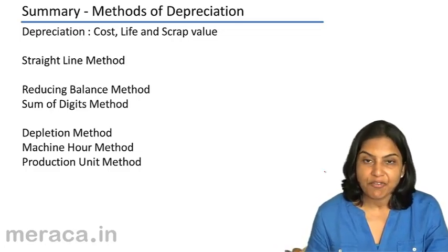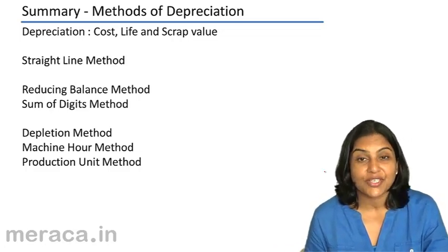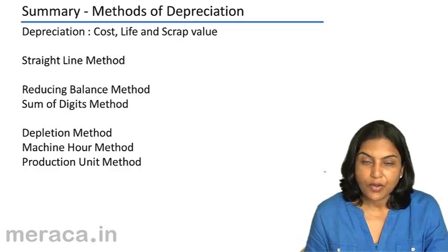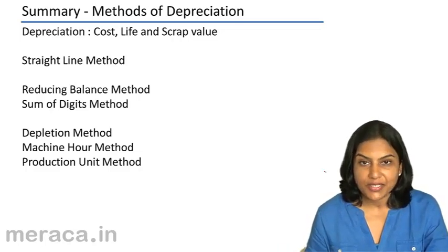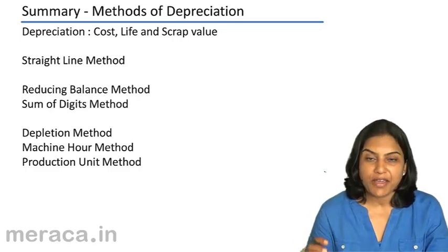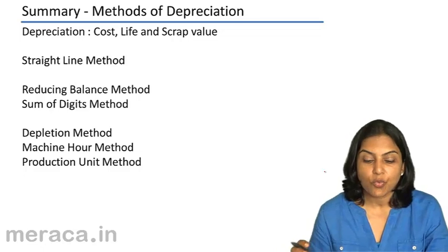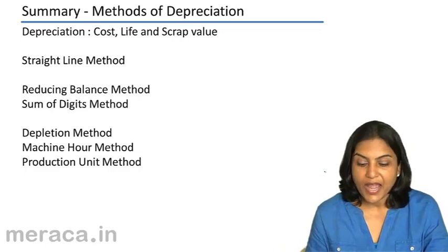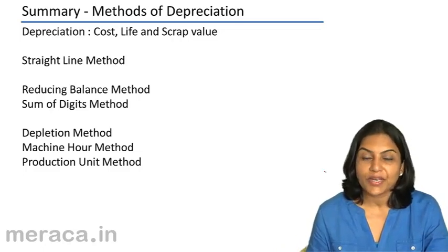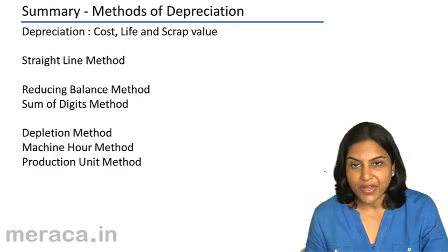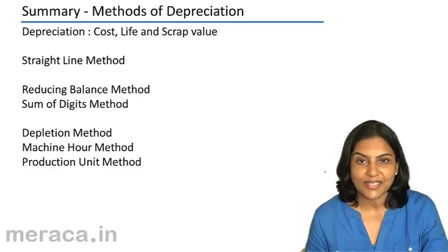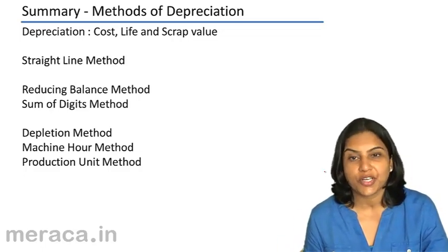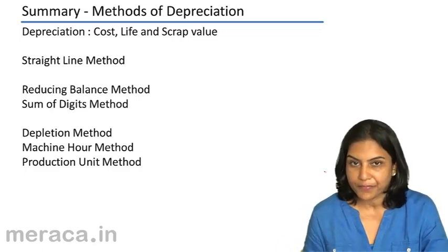Next is the life of the asset, which is an estimated figure. We estimate the life of the asset to be 5 years, 4 years, 7 years, or whatever is appropriate. We also need the scrap value or the residual value — the value at which we can sell the asset after its useful life is over.